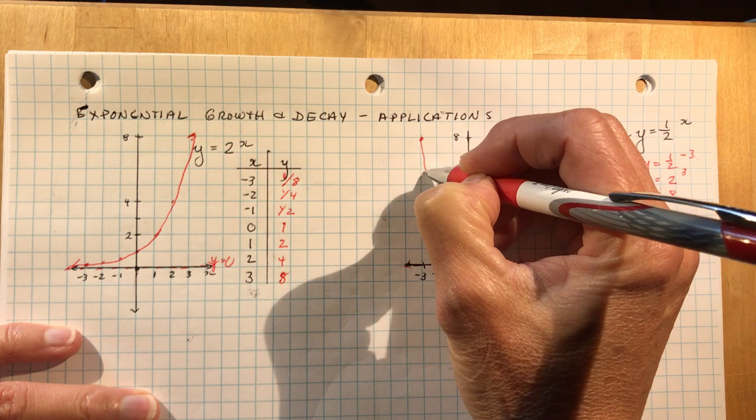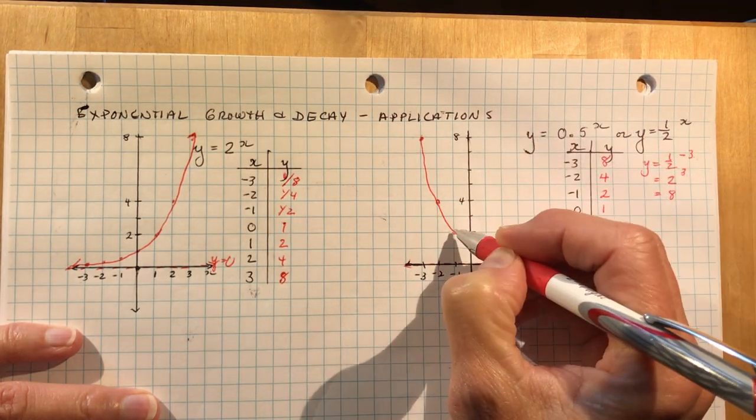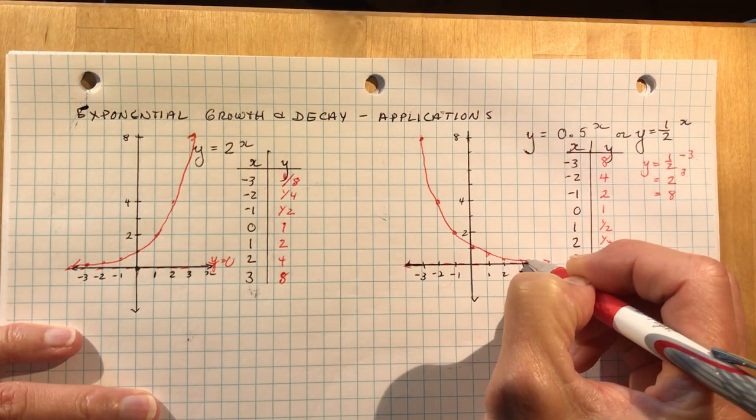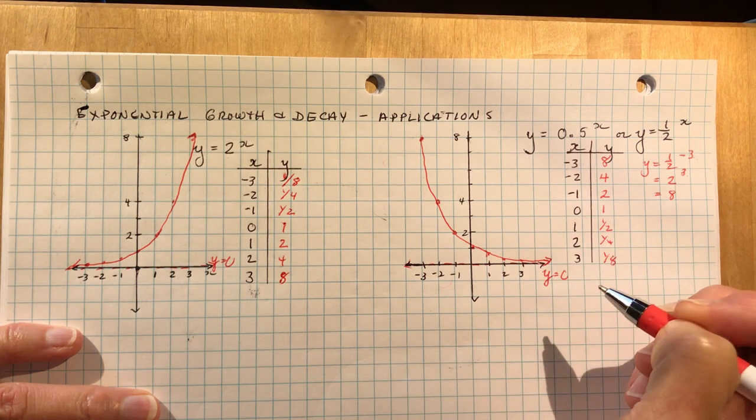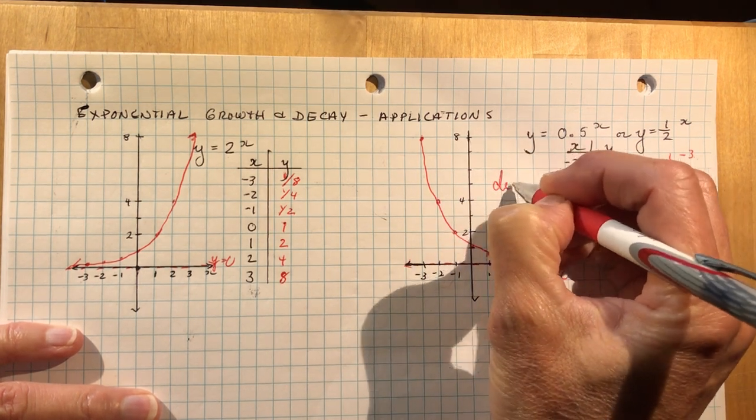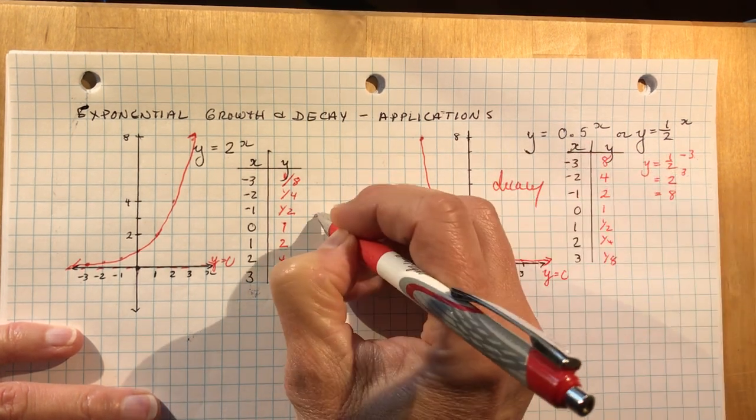So this is what we call a decay function. Decay means to rot away, doesn't it? It gets smaller and smaller. So this is my decay graph. This is my growth graph.